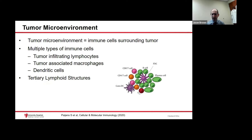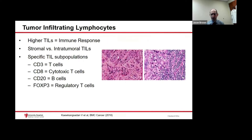First off, tumor-infiltrating lymphocytes, also known as T cells. Higher T cell counts typically mean more immune response around the tumor, and because more immune cells are attracted to the tumor, generally a better response to immunotherapy. T cells can be found either within the tumor cells, which would be called intratumoral, or in the area around the tumor, which would be called stromal.